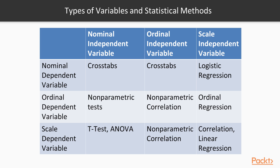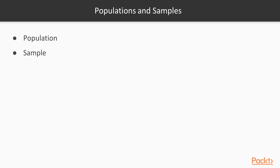Ideally for any analysis, you would have data about everyone you wish to study — the whole population. In practice, you rarely have information about all members of a population, so instead you collect information from a representative sample. We do this because we don't have the time or funds to collect data from everybody. However, the goal is to make generalizations about the characteristics of the population based on the known facts of the sample — which is why you want to make sure your sample is representative. Understanding how to make inferences from a sample to a population is the basis of inferential statistics, allowing you to reach conclusions without studying every single individual.